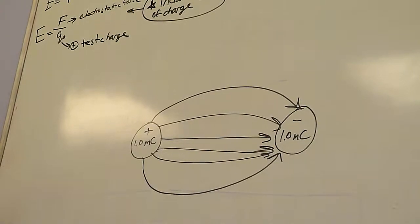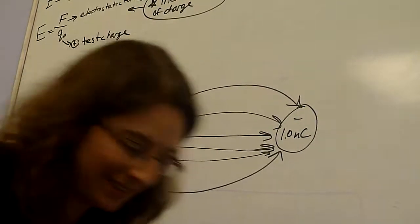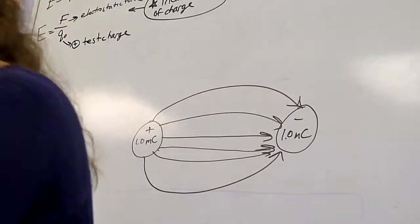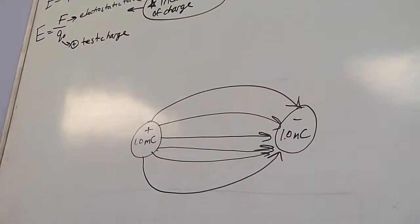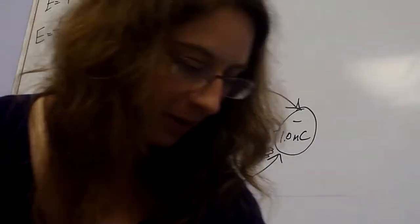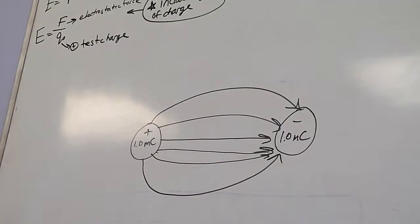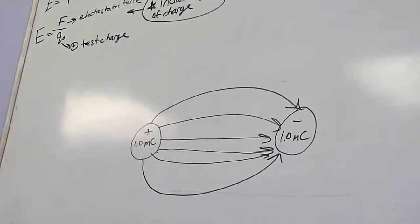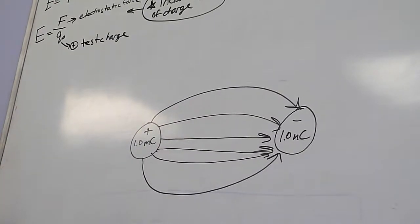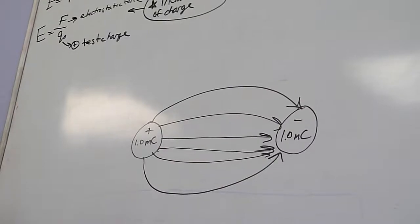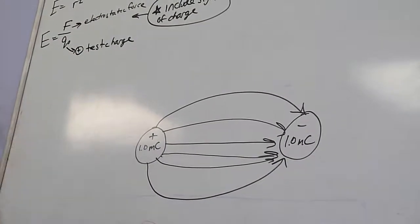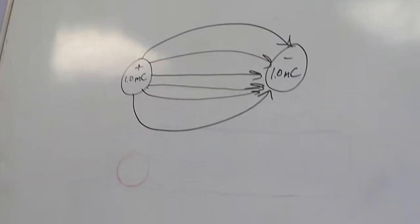What if we have two one-millicoulomb charges that are both positive? How will the lines be different? They'd be going out opposite. They'll have an equal number of lines going from positive somewhere — we'll draw four this time. They'll go away from each other because like charges repel. Where are they going now? Into outer space. This is just easy physics — we don't do it in three dimensions, just like we ignore air resistance. This is cheater physics for beginners.